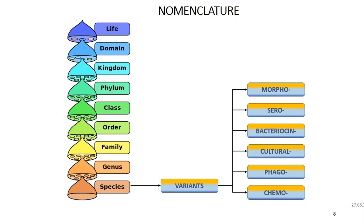In this slide you can see the basic scheme of modern classification. Many other levels can be used. Nomenclature classifies microorganisms based on biological position from the kingdom down to species. Some species have sub-variants according to the properties of shape, antigenic structure, cultivation, susceptibility to phage, and so on.